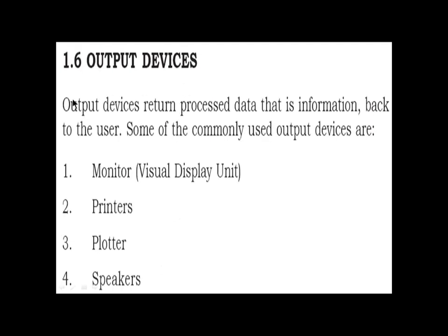Section 1.6 — Output Devices. Output devices return processed data — that is, information — back to the user. Some of the commonly used output devices are: 1. Monitor (Visual Display Unit), 2. Printers, 3. Plotter, 4. Speakers.